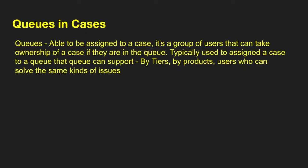With cases, you also get access to queues. Queues are typically a group of users that allow you to work the same case. A case can be assigned to the queue, and someone in that queue can pick it up and work it. Queues are typically made up of skilled people who can solve the problem. They can be set up by tiers, by products, or in any number of ways. Queues are a great way to assign a case to a group instead of an individual so it doesn't get lost.